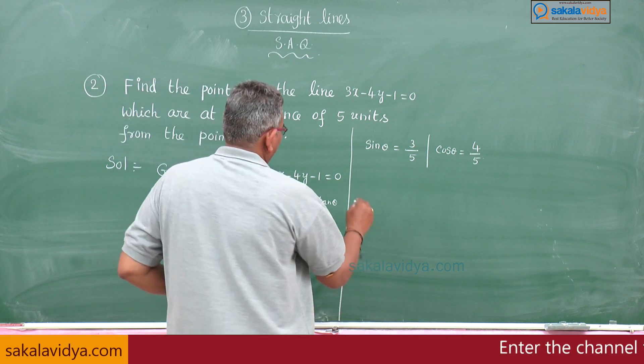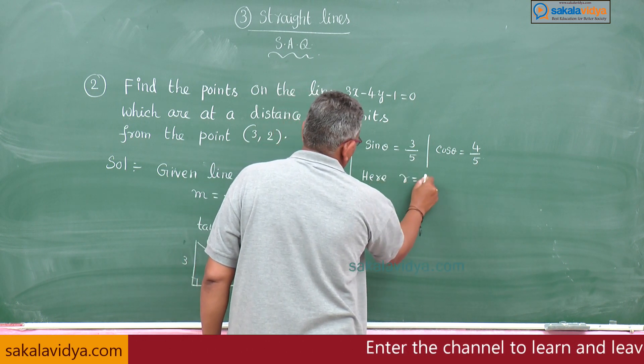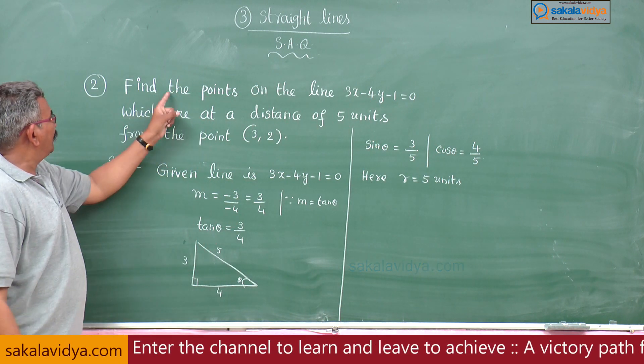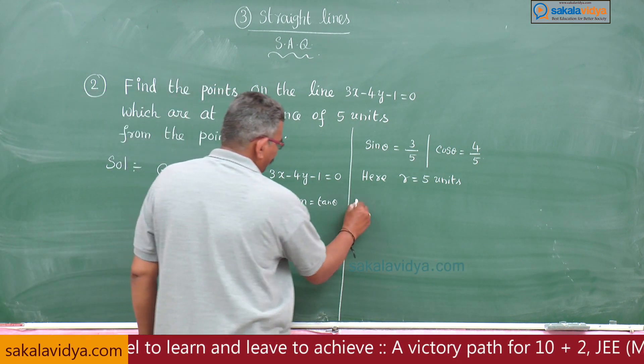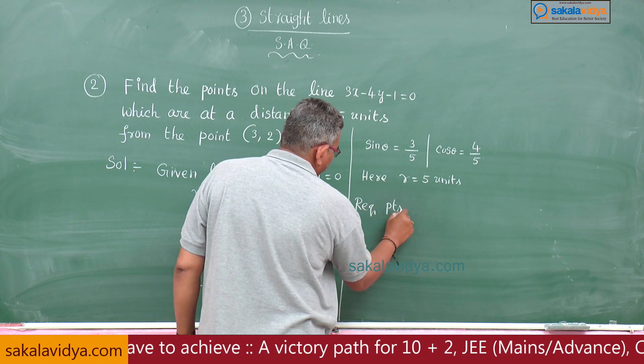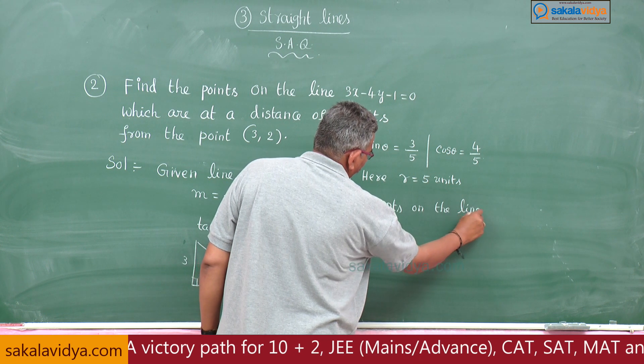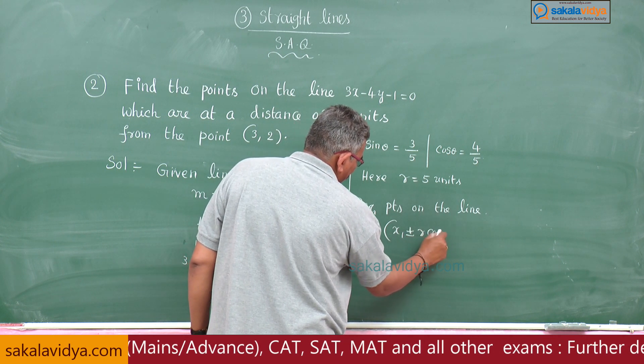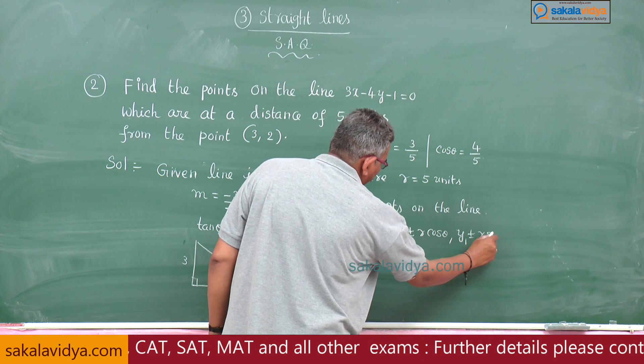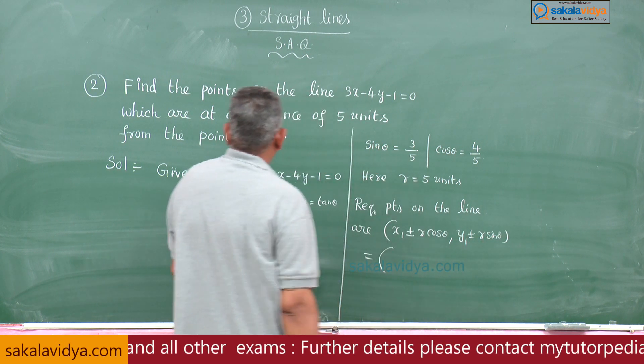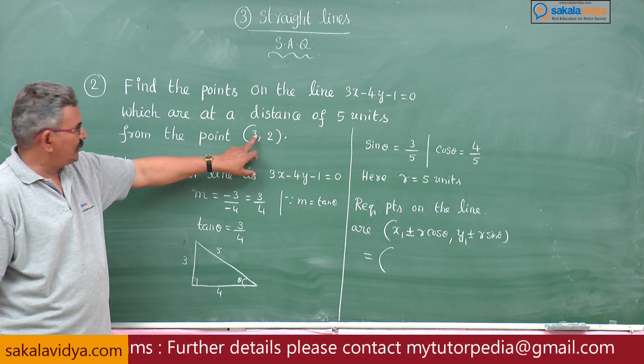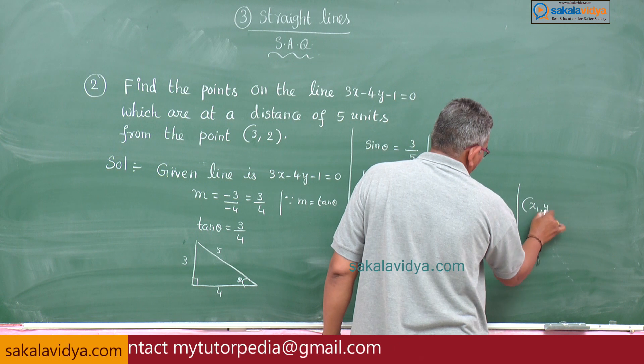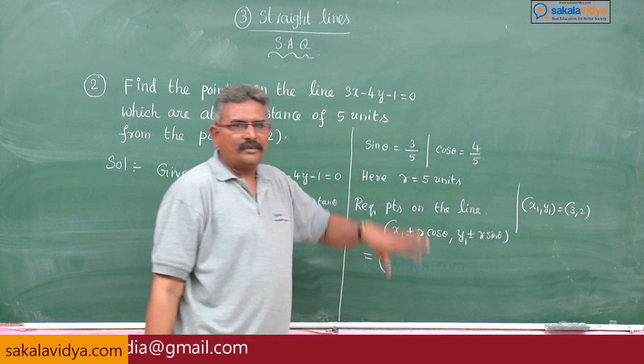Here r equals 5 units. Our goal is to find the required points on the line. The required points are x1 plus or minus r cos theta comma y1 plus or minus r sin theta. x1 comma y1 equals 3 comma 2. From this point, we write 3 plus or minus 5 times cos theta, which is 4 by 5, comma 2 plus or minus 5 times sin theta, which is 3 by 5.